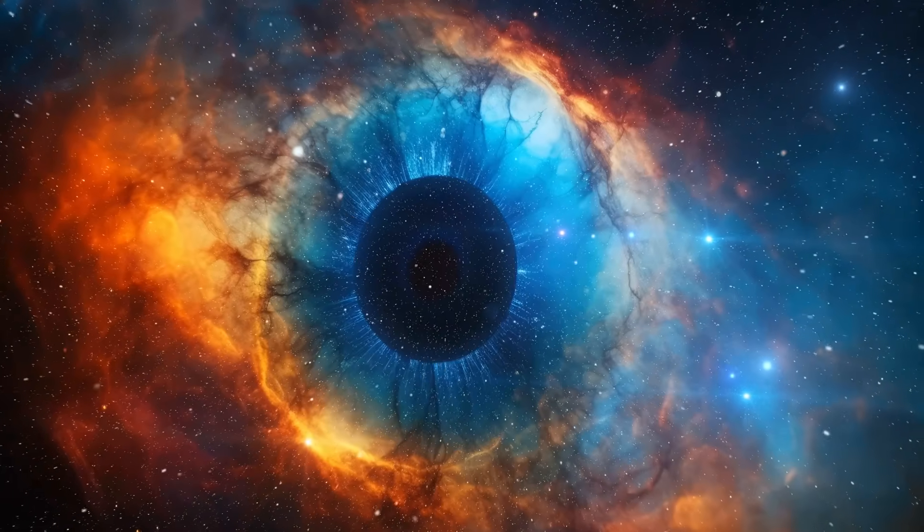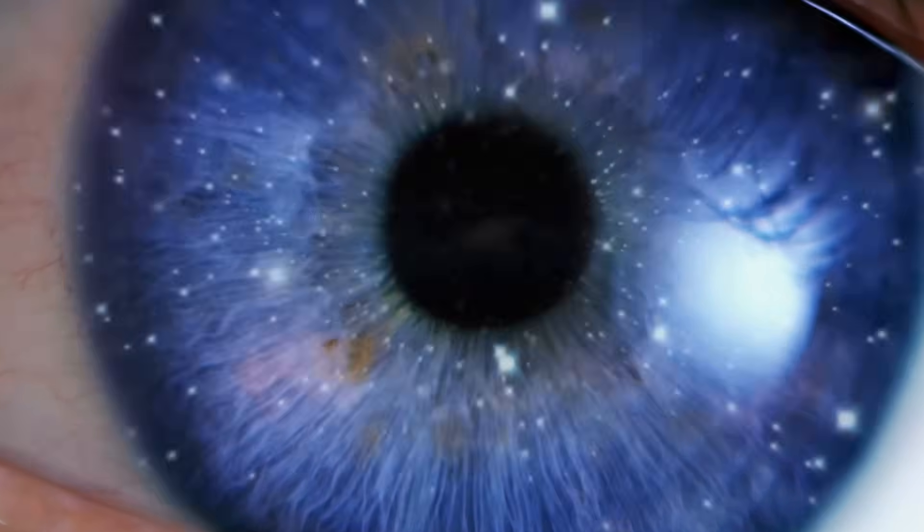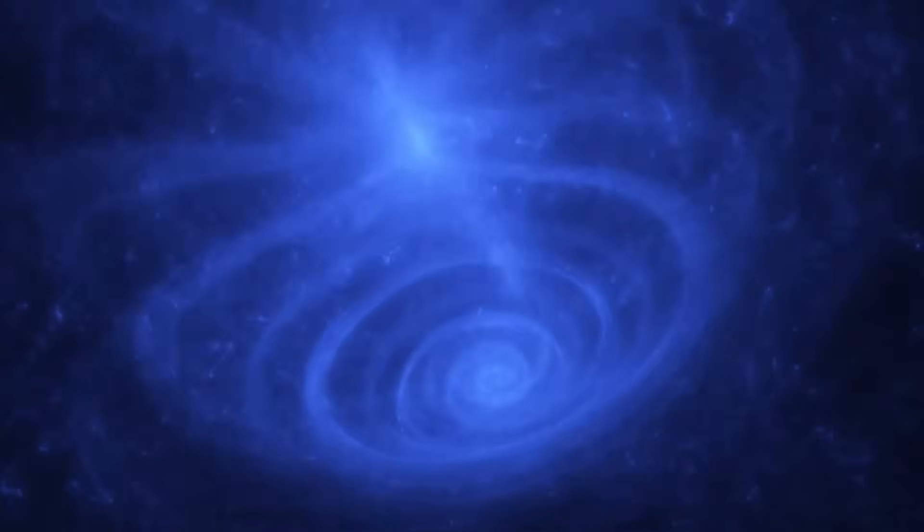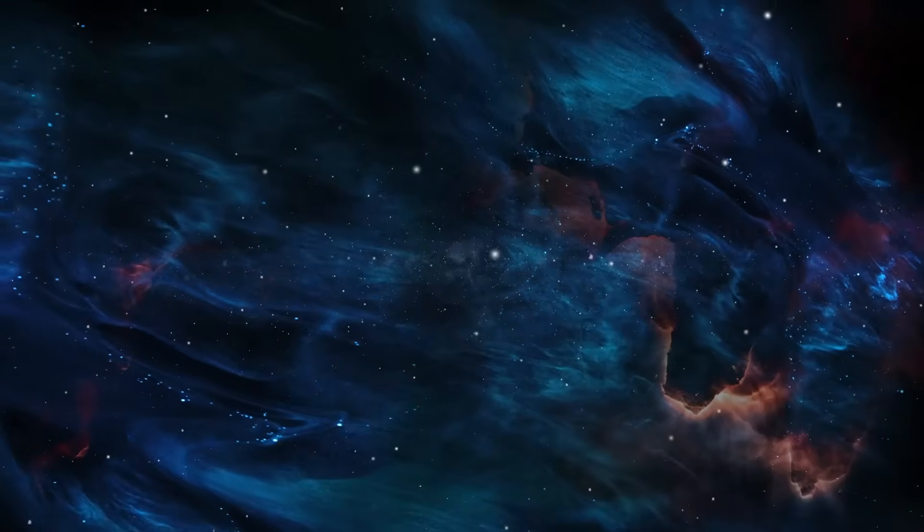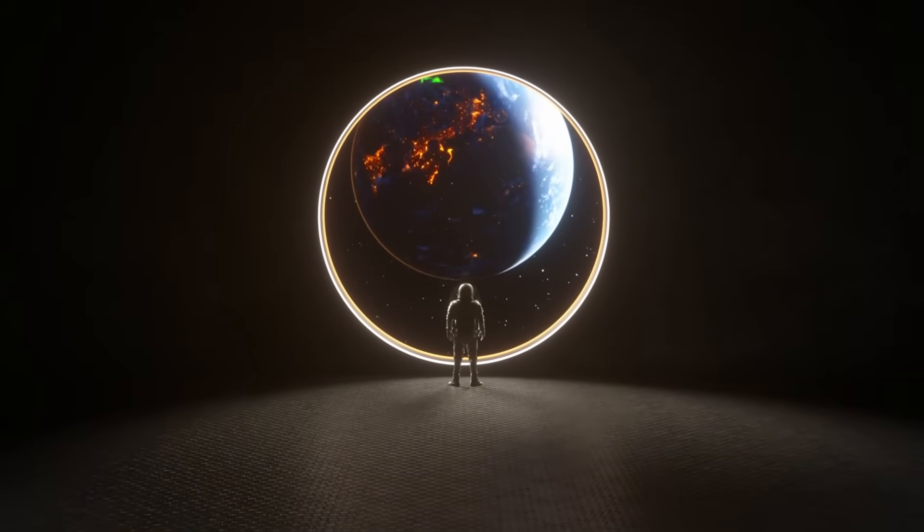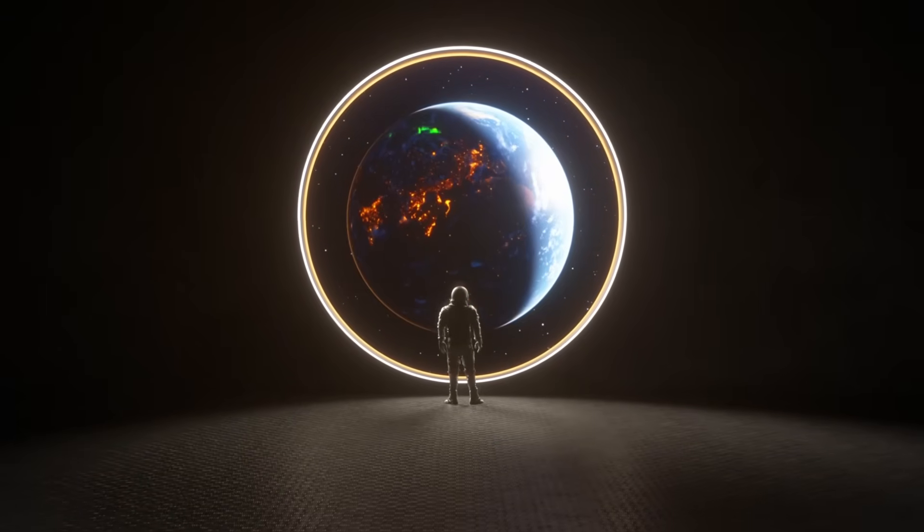At its core, the anthropic principles suggest that the universe must have the properties it does, because if it didn't, we wouldn't be here to observe it. In other words, the universe appears fine-tuned for life, because only in a universe that allows life would intelligent beings exist to ask these questions in the first place. It's a bit of circular logic, but it's one way to explain why the universe seems so perfectly suited for life.